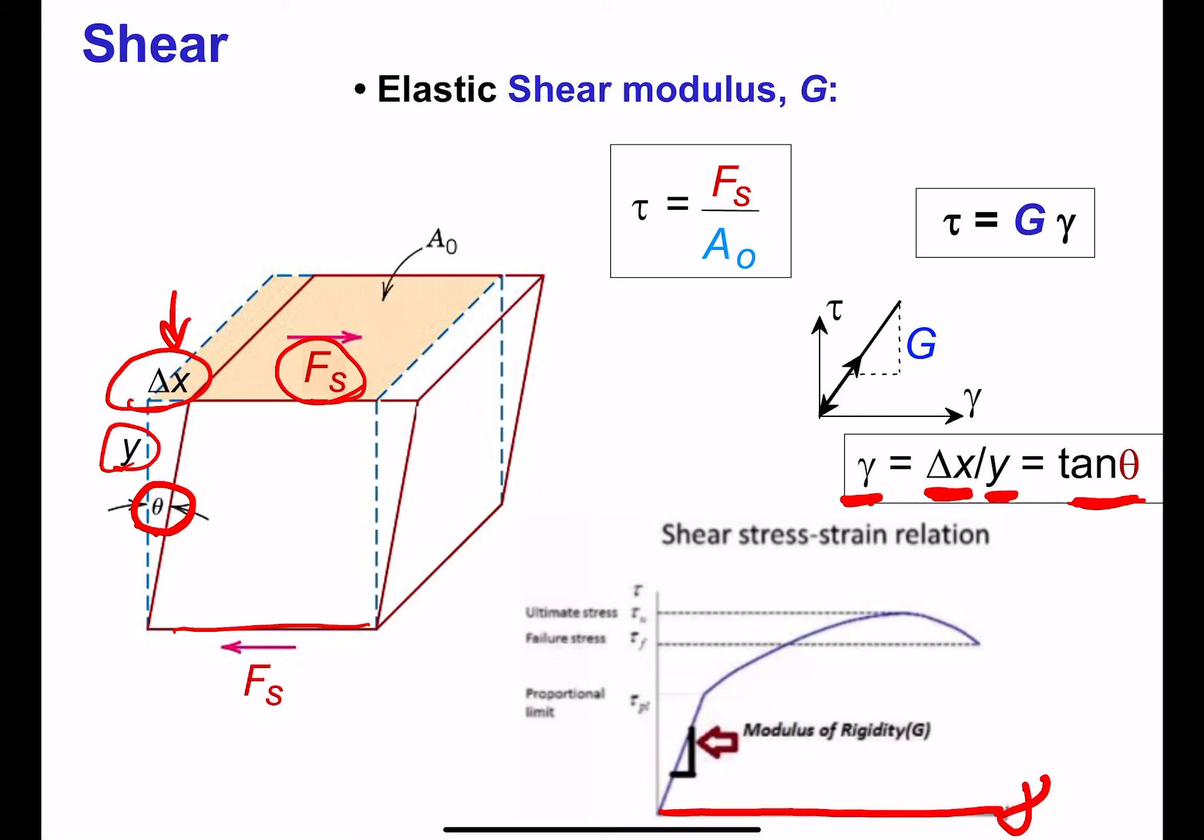The shear stress is very similar to what we had before—the shear force divided by the cross-sectional area. This time, the cross-sectional area is the area of the top plane specifically. Lowercase tau is the shear stress.